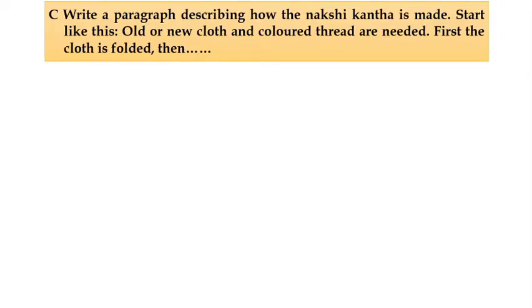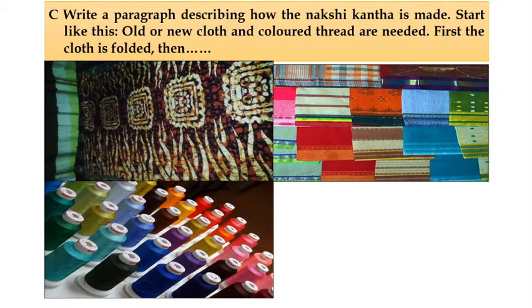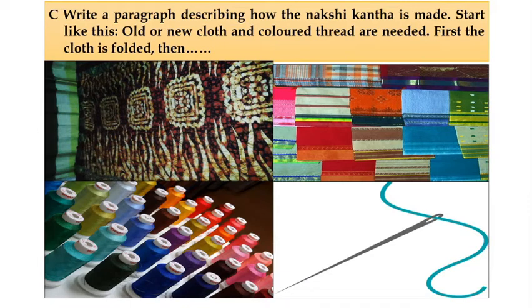Now my dear students, you will have to write a paragraph describing how Nakshikatha is made. I would like to give you some clues — start like this: old or new cloth and colored thread are needed. First the cloth is folded. Then continue with what ingredients and elements you need to make a Nakshikatha. You will continue the paragraph using connectors like 'then', 'next', 'after that', and complete the paragraph. Please try to write the paragraph at home.